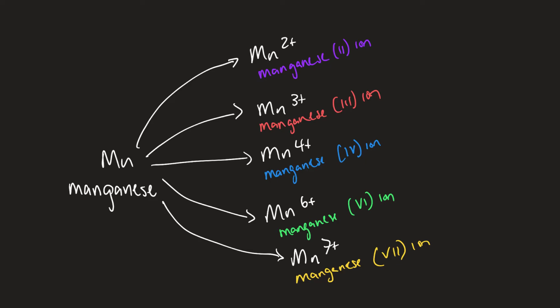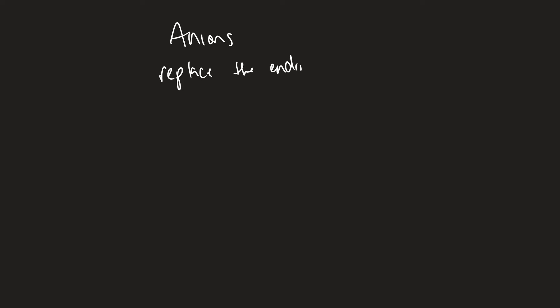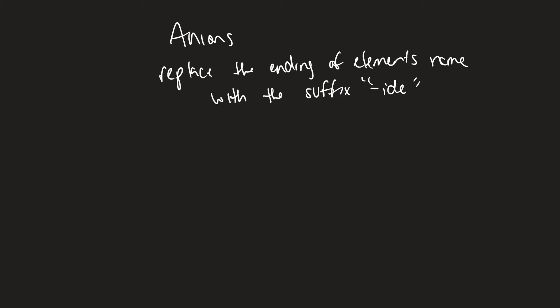The last thing we need to cover is naming anions — and these are a little bit different. For anions, what we typically do is replace the ending of the element's name with the suffix '-ide,' and then follow it with the word 'ion.'